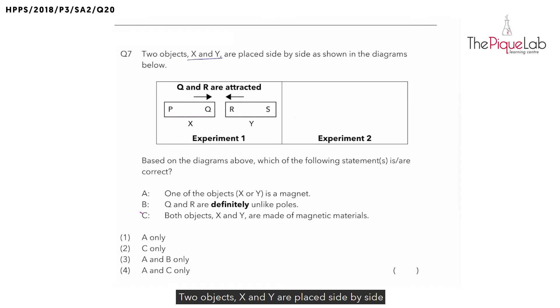Two objects X and Y are placed side by side as shown in the diagrams below. So in Experiment 1, we can see that Q is facing R and they are attracting each other. What can we conclude about these two bars X and Y? Can we immediately say that both are magnets? No, we can't. Why? Remember, when we want to confirm that both objects are magnets, we need to look out for repulsion. Have we seen repulsion here? No, we have only seen attraction.